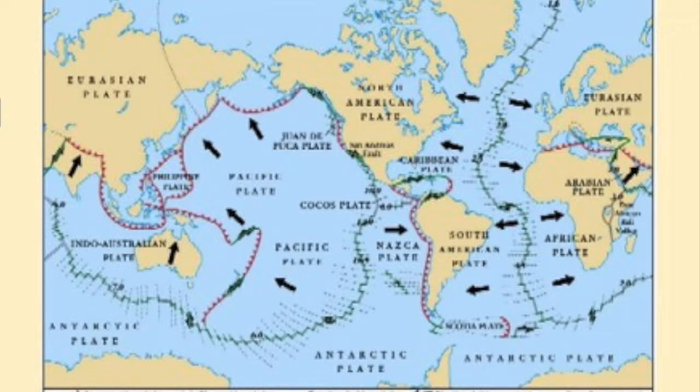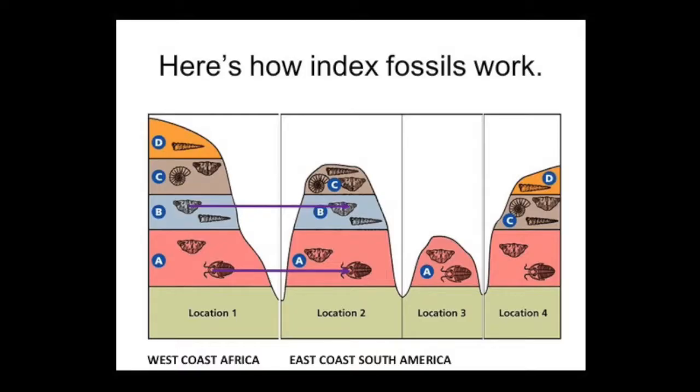Plates actually float on the mantle and move a little bit each year due to convection currents in the mantle. This standard is saying that students should note the jigsaw type patterns in the plates and that in many cases the exact same fossils have been found on two different continents. An example of this would be index fossils found along the west coast of Africa and the east coast of South America.